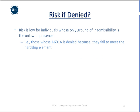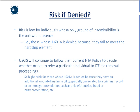Regarding the risk if the I-601A waiver is denied: the risk is low for individuals whose only ground of inadmissibility is unlawful presence — for example, those whose waiver is denied because they fail to meet the hardship element. USCIS will continue to follow its current Notice to Appear policy to decide whether to refer an individual to ICE. The risk is higher for those whose waiver is denied because they have an additional ground of inadmissibility, especially those related to criminal record or immigration violations such as unlawful entries, fraud, or misrepresentation.